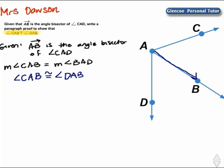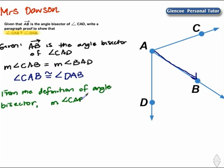So a paragraph proof is a summary of what we have. From the definition of angle bisector, the measure of angle CAB is equal to the measure of angle DAB.